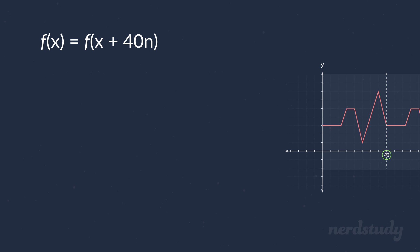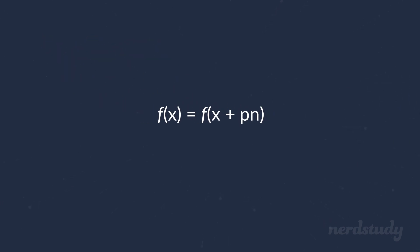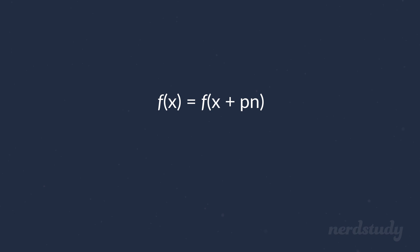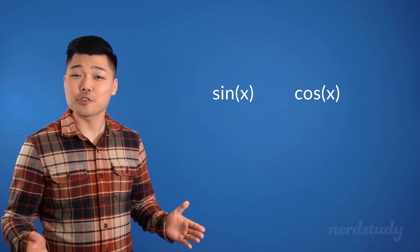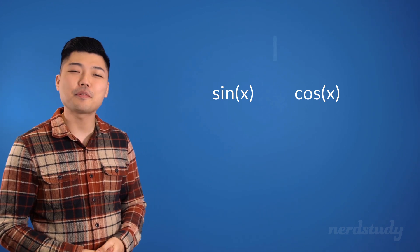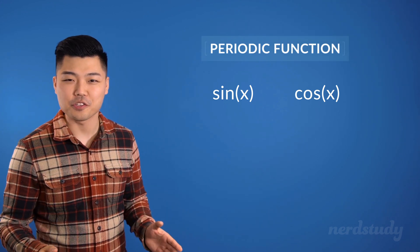Finally, we can represent the same thing in a general form by saying that if p represents the period in a periodic function, then we can write it as f(x) = f(x + p·n). In the next lesson, we will discuss the sine function along with the cosine function, because interestingly enough, both of these functions happen to be periodic functions as well.